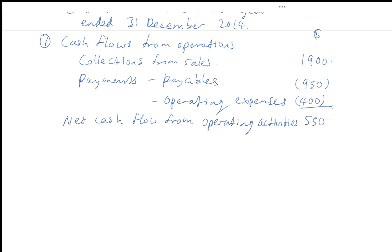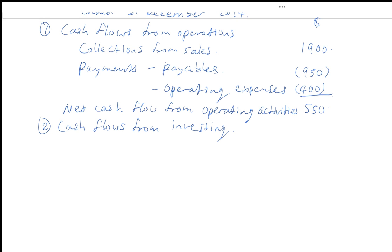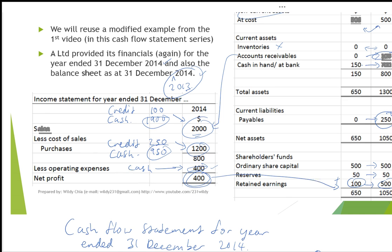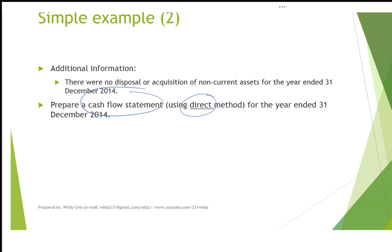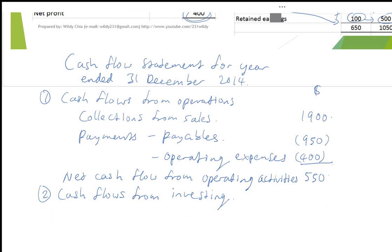$1,900 minus $950 minus $400 gives a positive cash flow from operating activities of $550. Moving on to cash flows from investing: when we talk about investing, it means purchase and sale of fixed assets. In this example, there are no purchases or sales of assets — the question confirms under additional information that there is no disposal or acquisition of non-current assets in the year. So there are no cash flows due to investing activities.